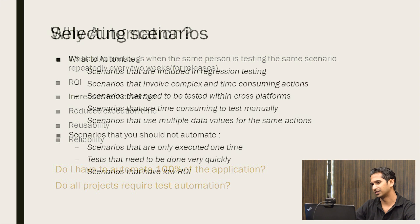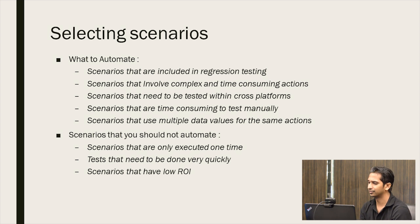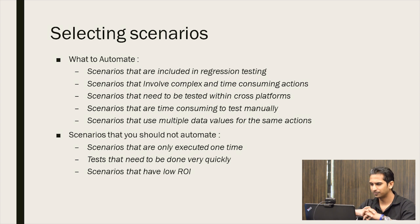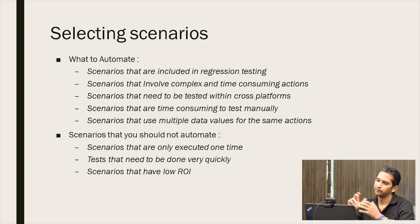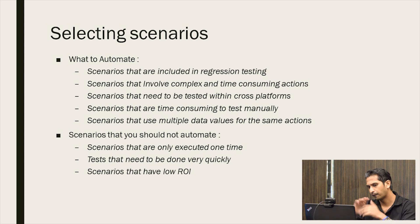Let's move on to selecting scenarios — how do you select scenarios to automate? First, scenarios that are included in regression testing. This is obvious. In regression testing you are testing the same scenarios again and again, so it's good to add all regression scenarios to a test automation tool. Also automate scenarios that involve complex and time-consuming actions. Someone might argue why automate a complex scenario, but trust me, when you automate a complex and time-consuming scenario it gives you a huge ROI because it executes very quickly.